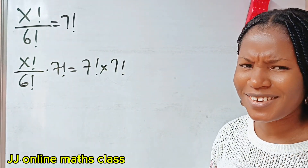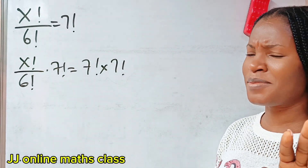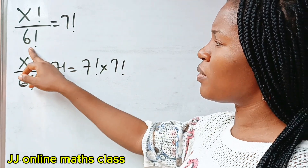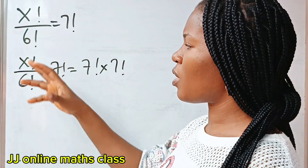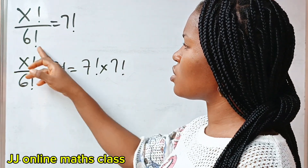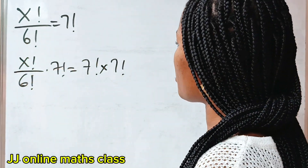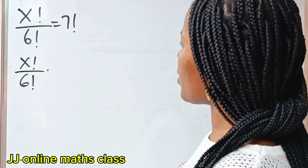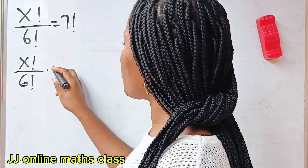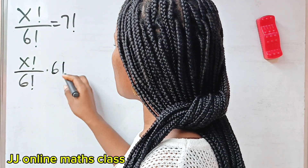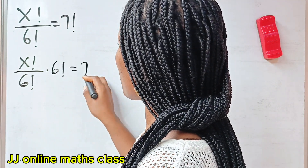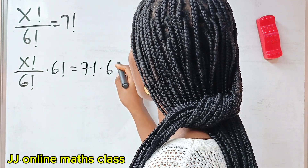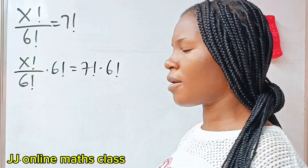Sorry, excuse me — let's multiply both sides by 6 factorial, because the intention is to cancel out this 6 factorial. Sorry about that. So we multiply both sides by 6 factorial. We have x factorial divided by 6 factorial multiplied by 6 factorial is equal to 7 factorial multiplied by 6 factorial.